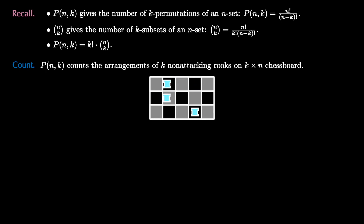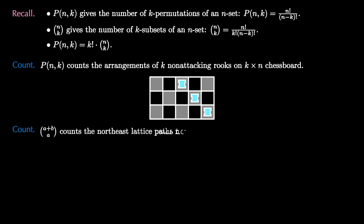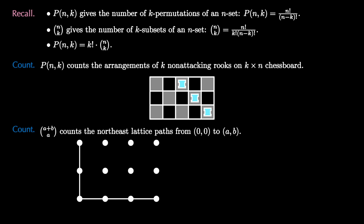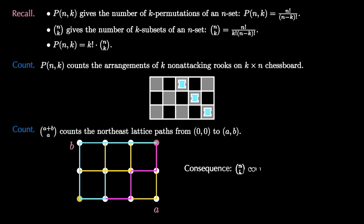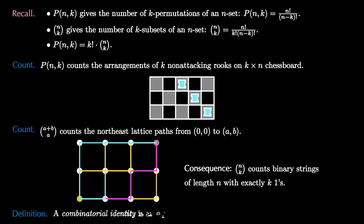Here are all of them on a 3-by-5 chessboard. The binomial coefficient a+b choose a counts the number of northeast lattice paths from the point (0,0) to the point (a,b). These are paths that start at (0,0) and make their way to (a,b) only moving north and east, or right and up. A consequence of this is that n choose k counts the number of binary strings of length n with exactly k ones.